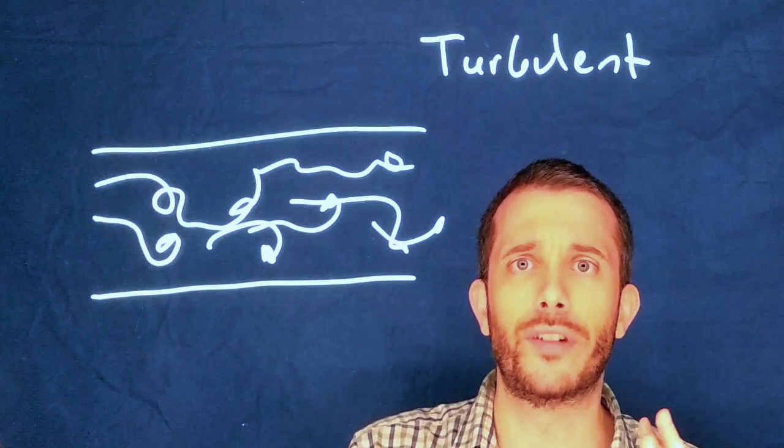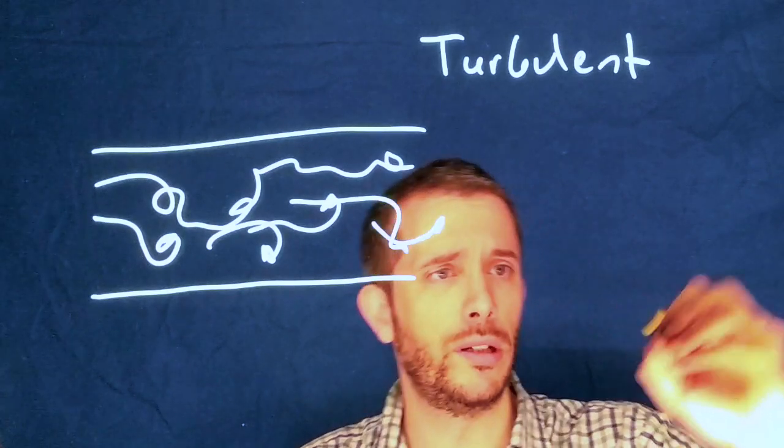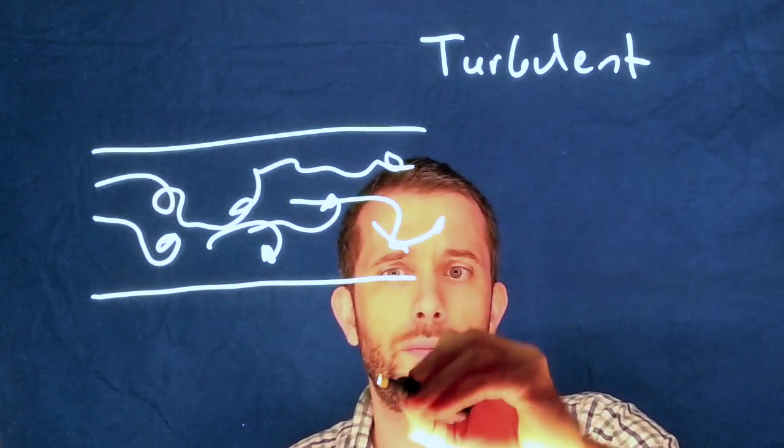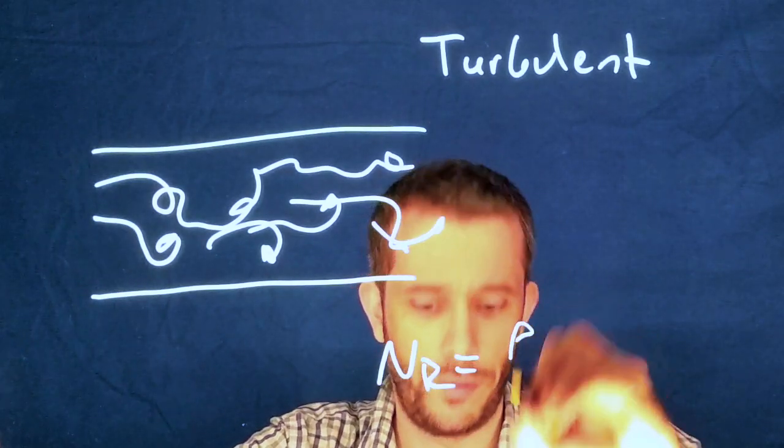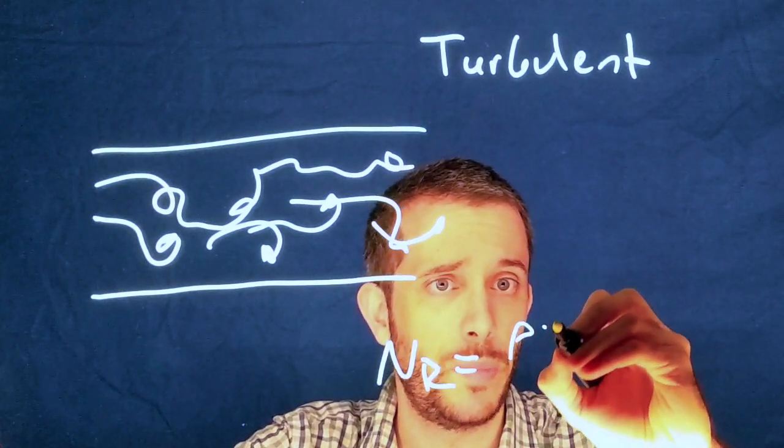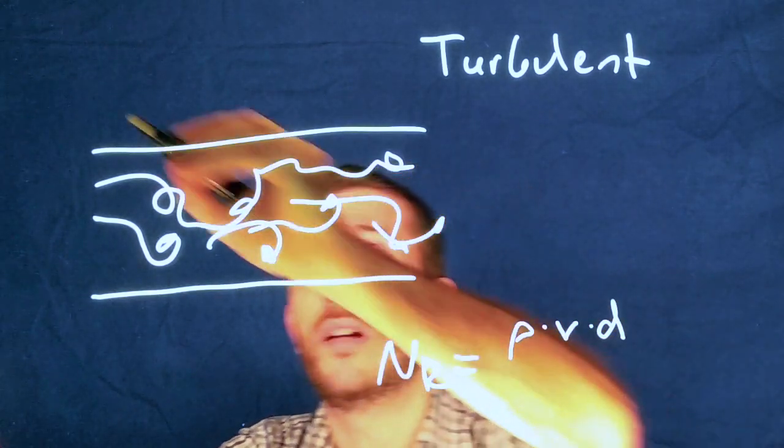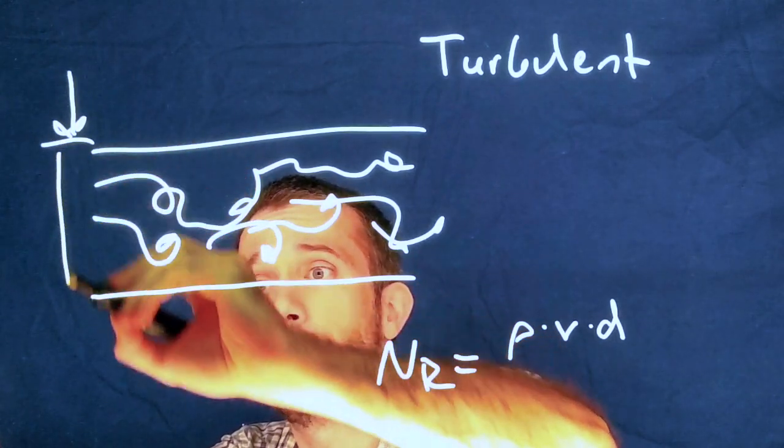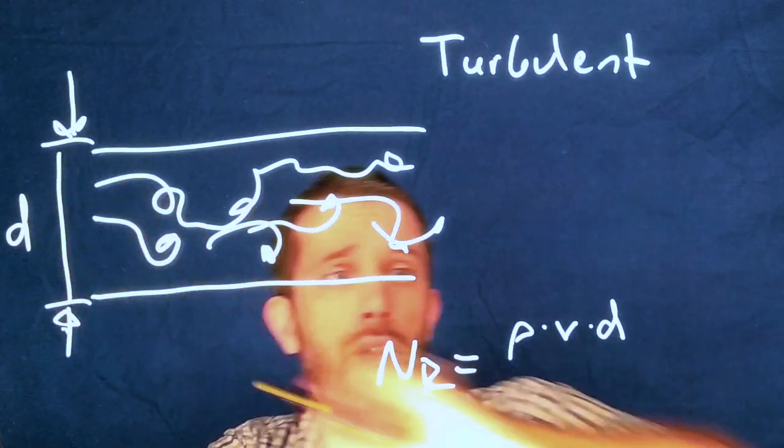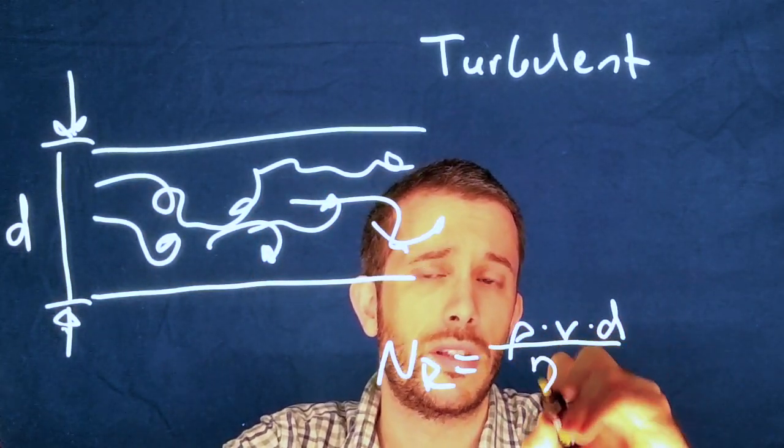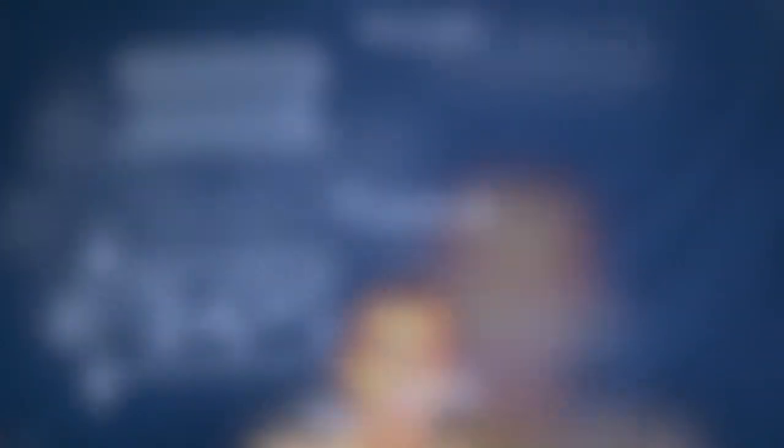Well, we have a good indicator for this one, which is the so-called Reynolds number. The Reynolds number can be calculated as the density of your fluid times the speed at which your fluid is traveling times a typical distance. In the case of a pipe, that will be your diameter. And then you divide it by the viscosity, which is another material constant that you can look up for your fluid.